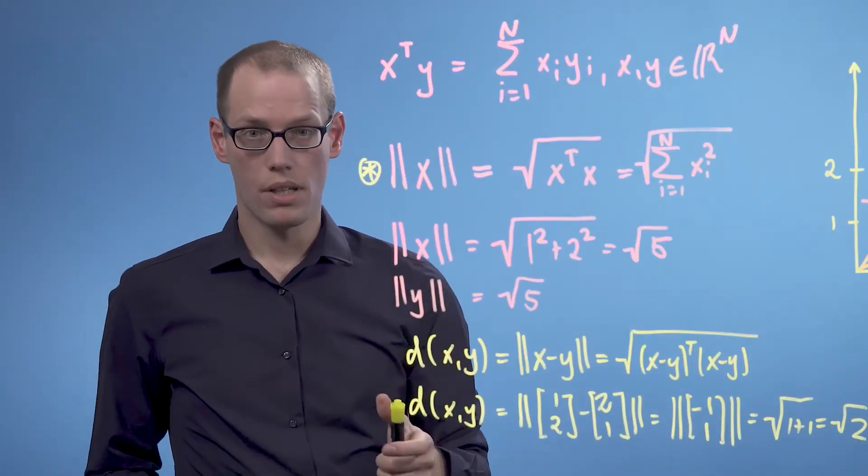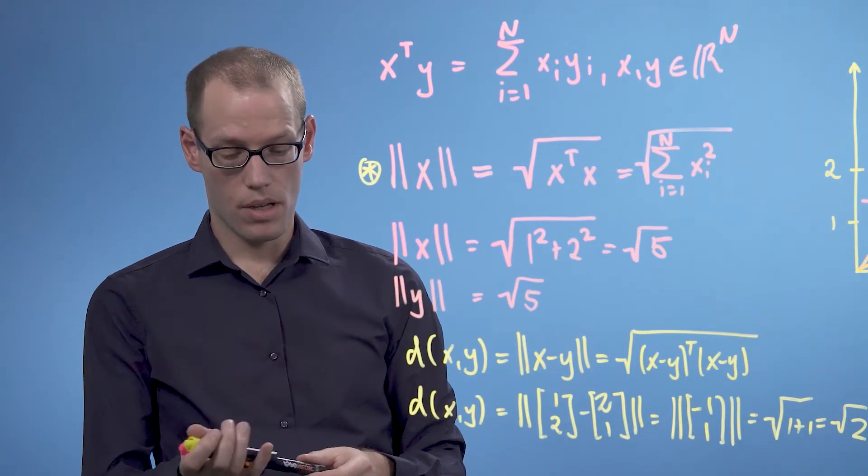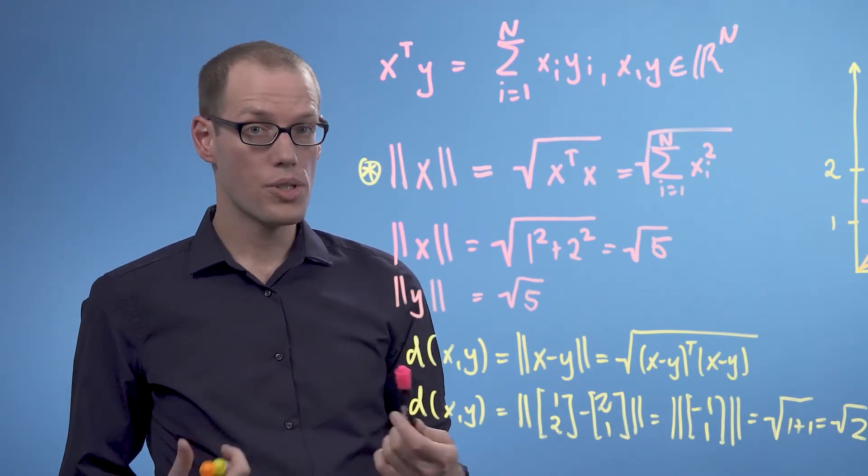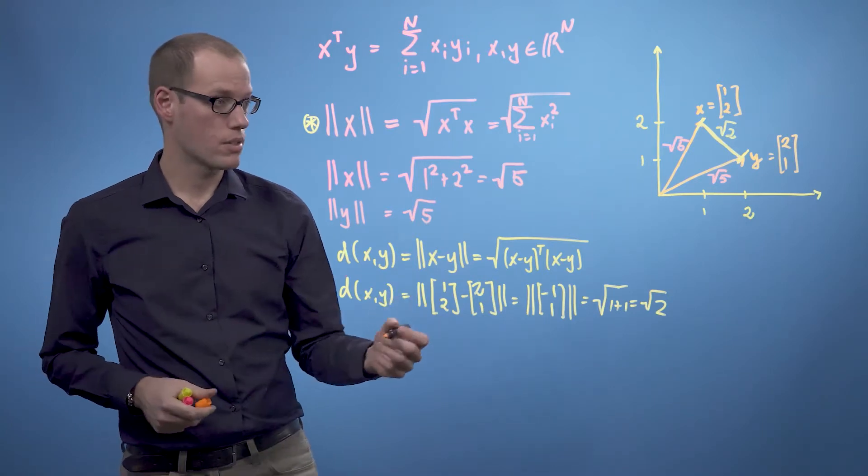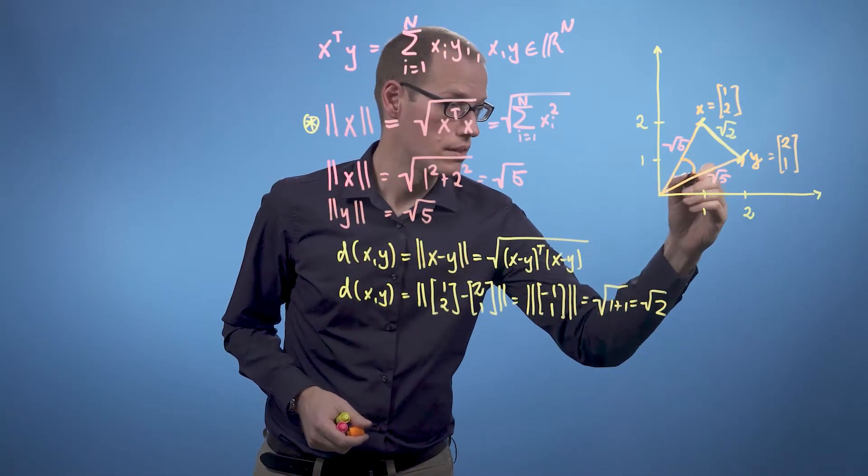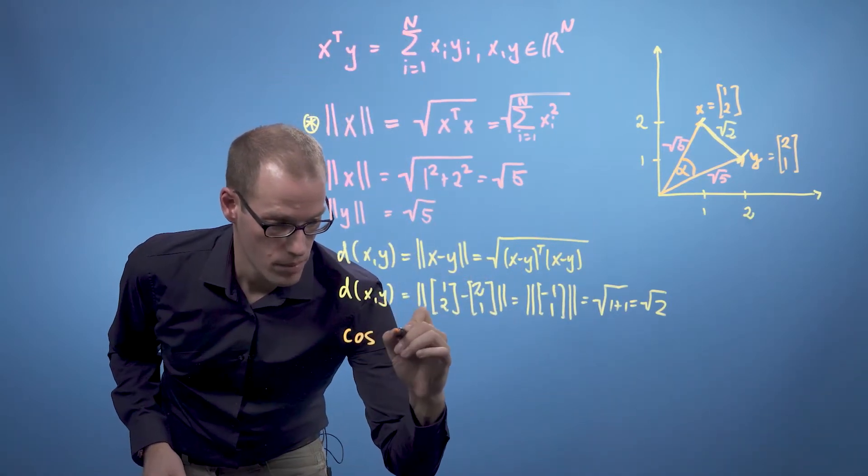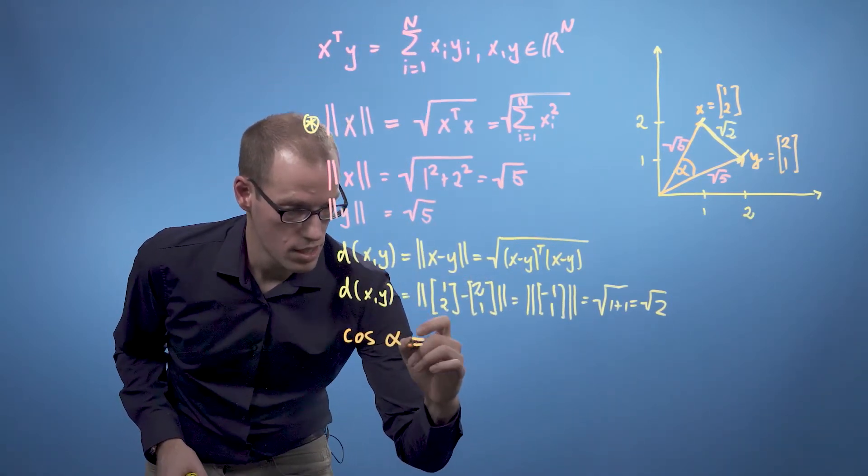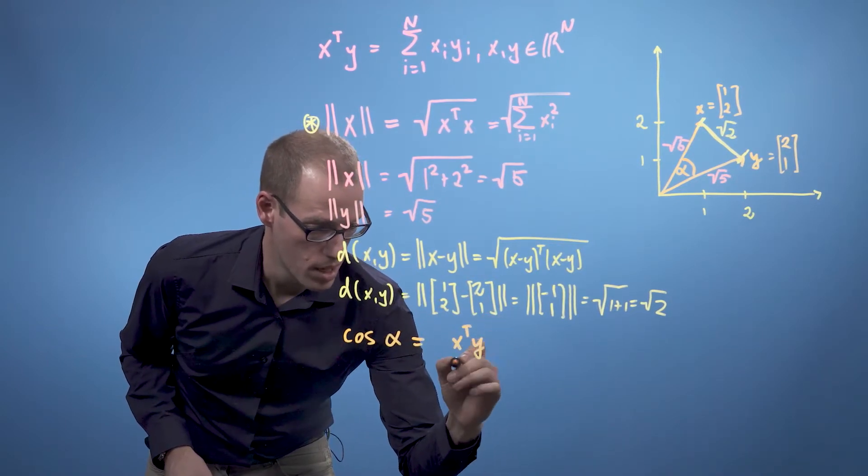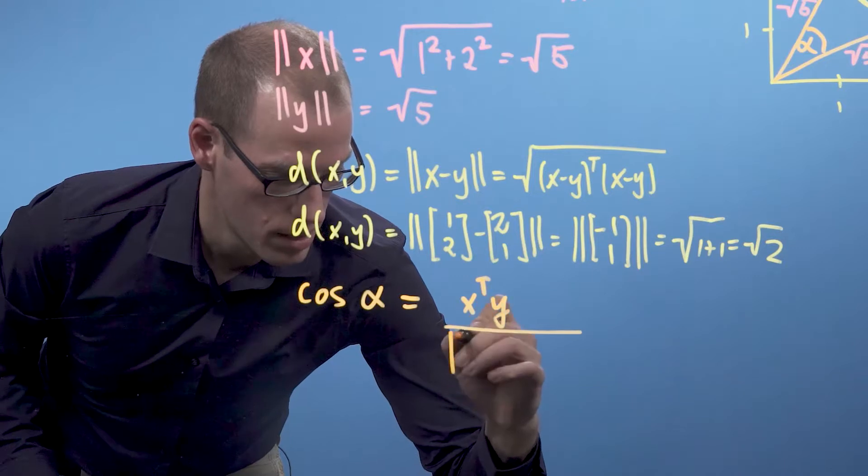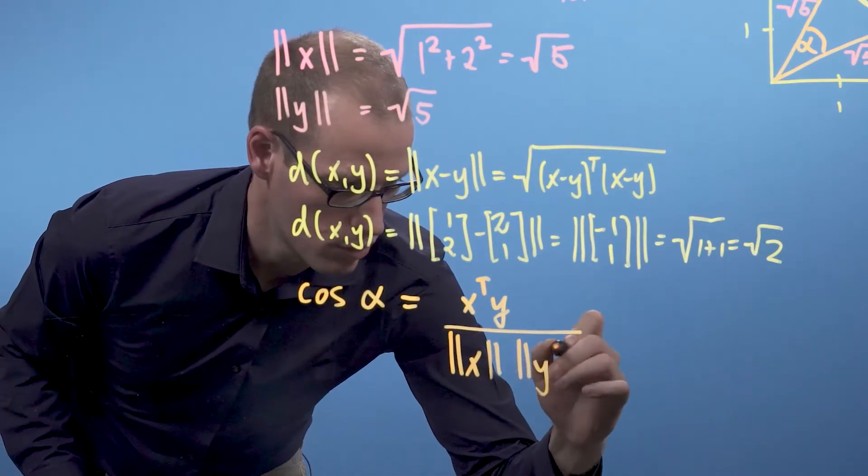So the last thing we are still interested in is the angle between two vectors, and we can compute the angle also using the dot product. The cosine of the angle, let's call this angle alpha, so the cosine of alpha is given by x transpose y divided by the length of x times the length of y.